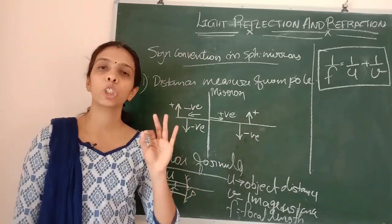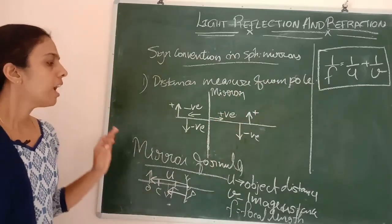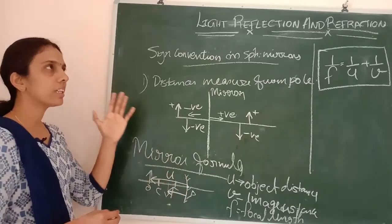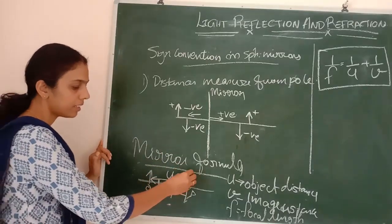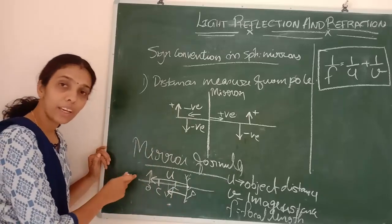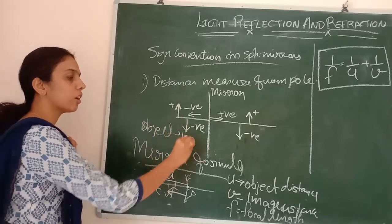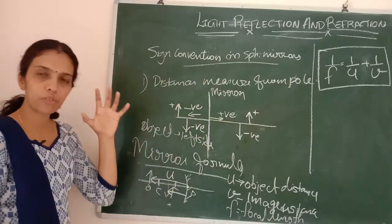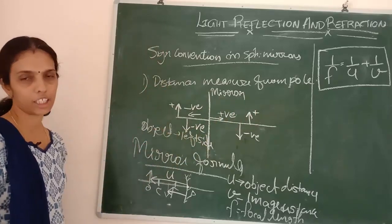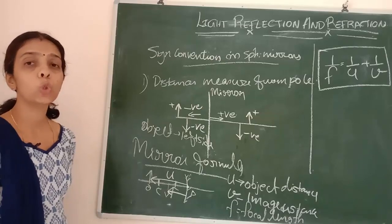The mirror formula is 1/F = 1/U + 1/V. No derivation is required. Always keep the object on the left side of the mirror. Object distance U is always negative as per sign convention since the object is on the left side. Distances are measured from the pole: right side positive, left side negative, upward positive, downward negative.